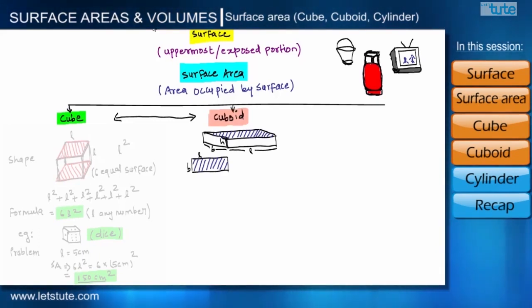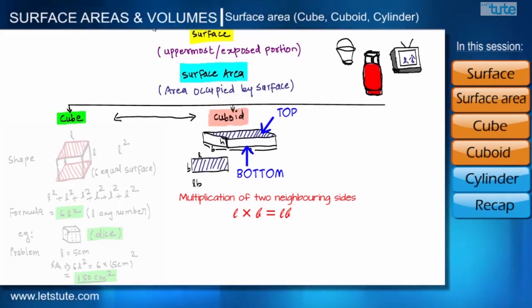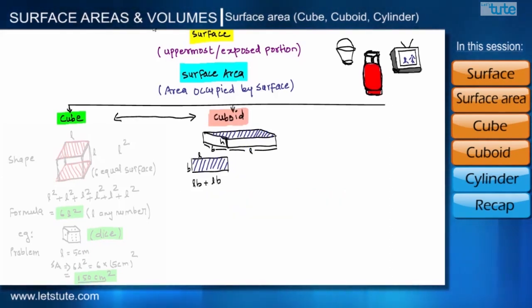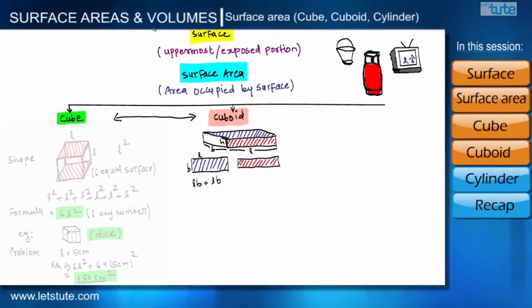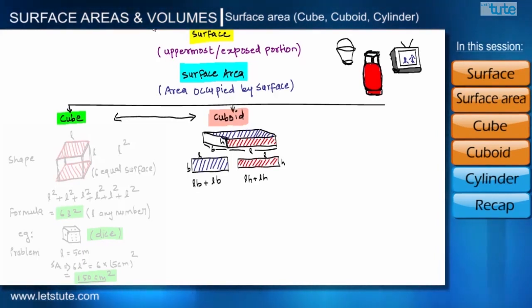The area of a rectangle with sides L and B is L × B. Since we have two surfaces — the top surface and the bottom surface — we add another LB. Now we will find the surface area of the front surface. This surface is rectangular with length L and height H, so its area is L × H. Since we have two surfaces — front and back — we add another LH.